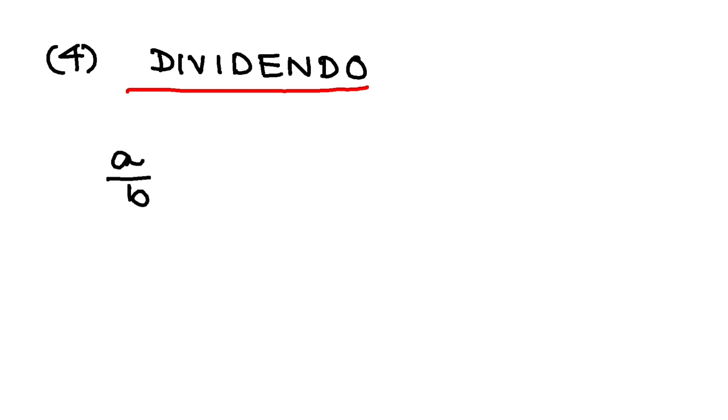Dividendo says if a/b equals c/d, then you will have (a-b)/b equals (c-d)/d.